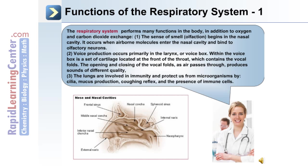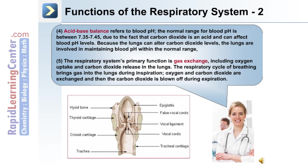Number two is voice production, which occurs primarily in the larynx or voice box. Within the voice box is a set of cartilage located at the front of the throat, which contains the vocal folds. The opening and closing of the vocal folds as air passes through produces sounds of different quality. Number three, the lungs are involved in immunity — they protect us from microorganisms through the actions of cilia, mucus production, the mucus elevator, the coughing reflex, and the presence of immune cells.